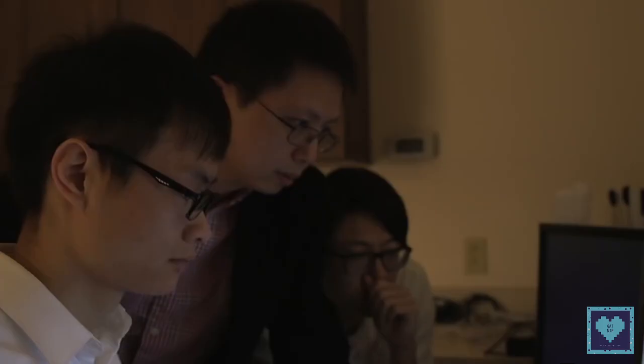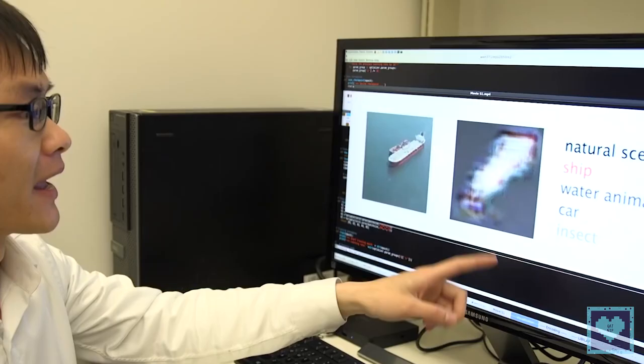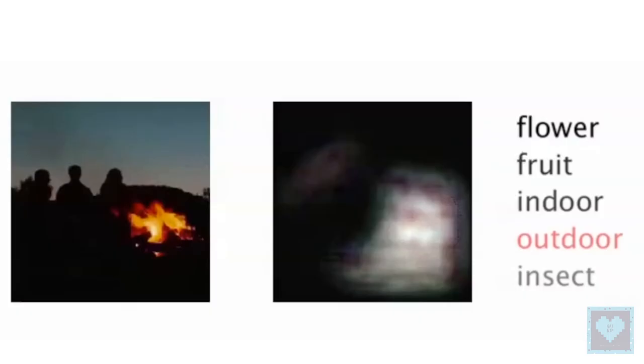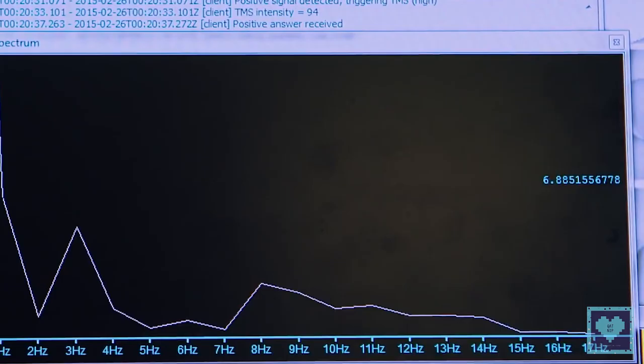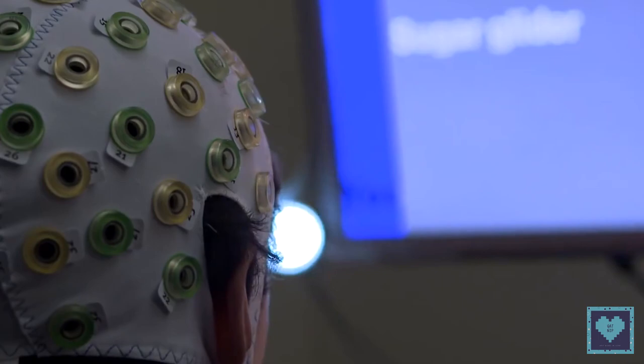The model was able to accurately decode the fMRI data into specific image categories. Actual video images were then presented side by side with the computer's interpretation of what the person's brain saw based on fMRI data.